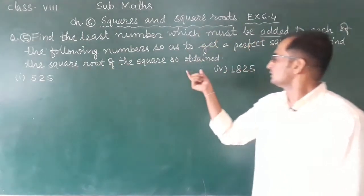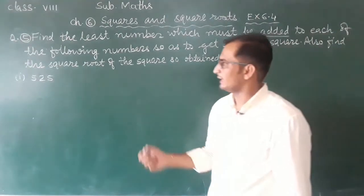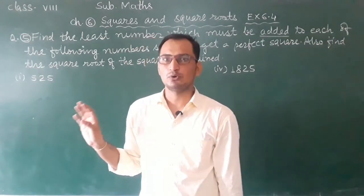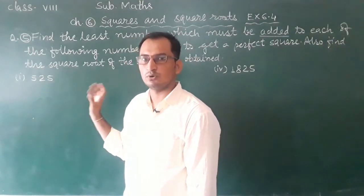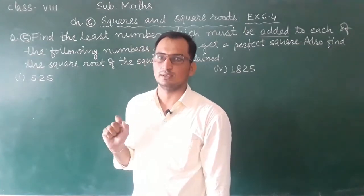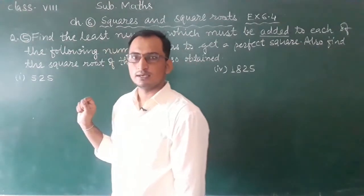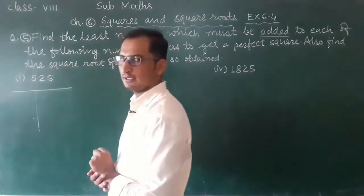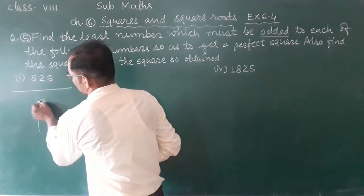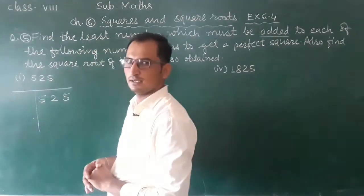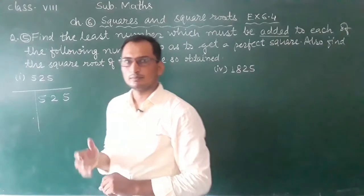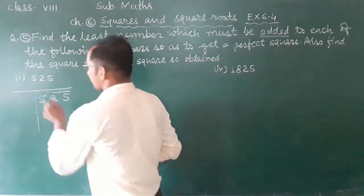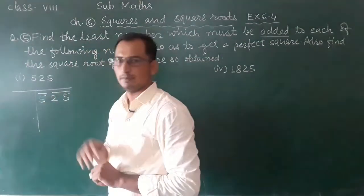First part is 525. We will apply the division method to find the square root. After pairing from the right, this is the first pair and this is single, this is the second pair.